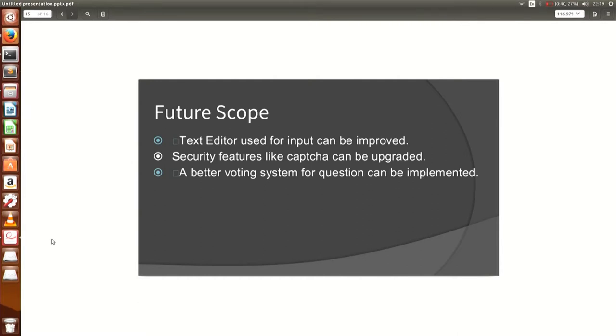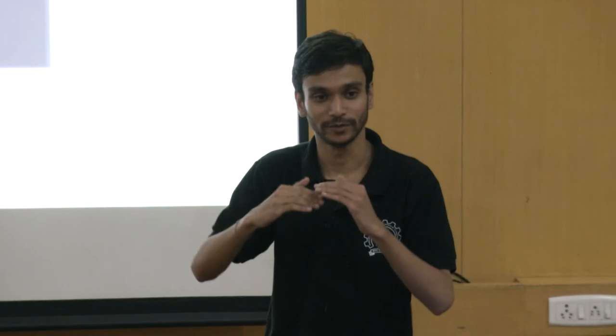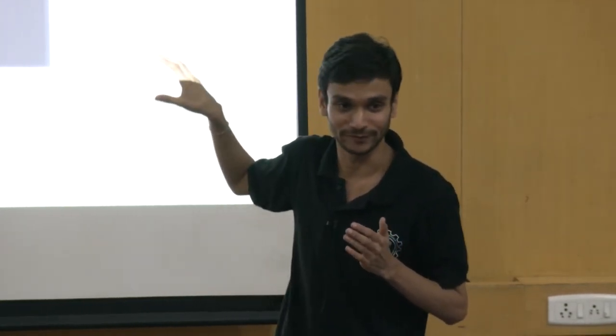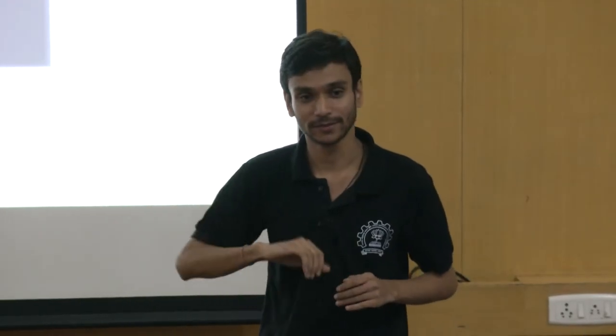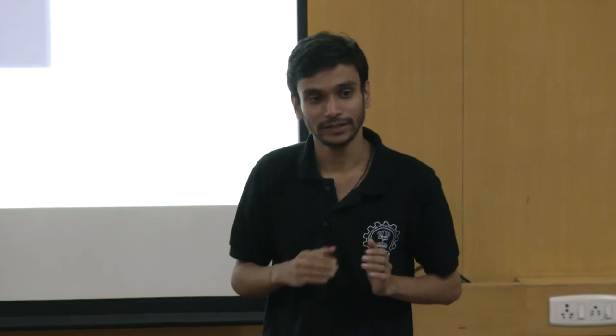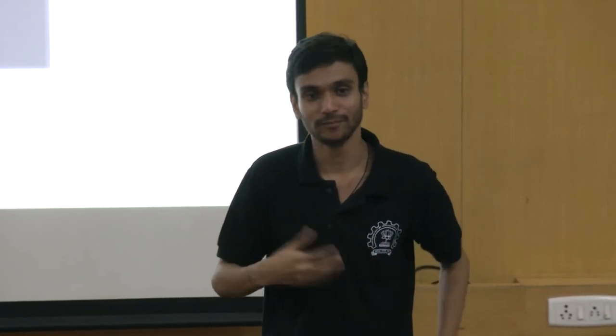For future scope: the current text editor does not have the ability to add code-formatted blocks, so that can be added. The current captcha is text-based, but about two weeks ago an advertisement appeared on the live forum, so they tested image captcha and it works well — no one can penetrate it. The voting system currently is thumbs up and thumbs down only, similar to Stack Overflow, and could be improved with a 5-star rating system.